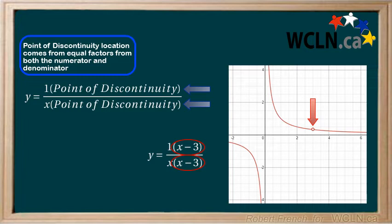This makes sense when we think about it a little more, as you could never have a function that crosses the x-axis and has a vertical asymptote at the same x value.